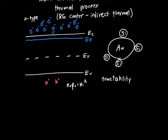We're interested in finding a differential equation dp/dt that describes how the hole concentration changes with time. First, we'll analyze this at equilibrium. At equilibrium, the hole concentration is just p₀ and the electron concentration is n₀. Since this is an n-type semiconductor, n₀ is approximately equal to the donor concentration, and p₀ equals nᵢ² divided by the donor concentration.